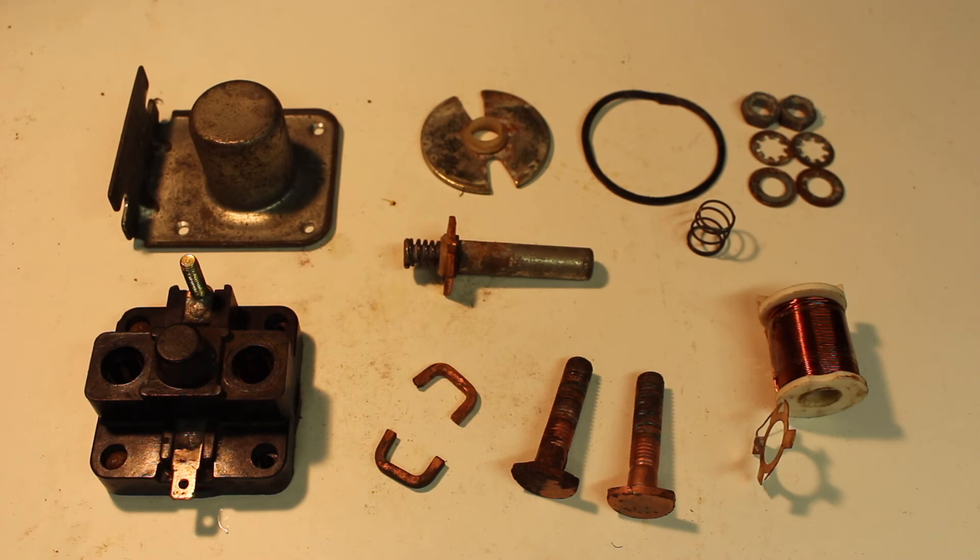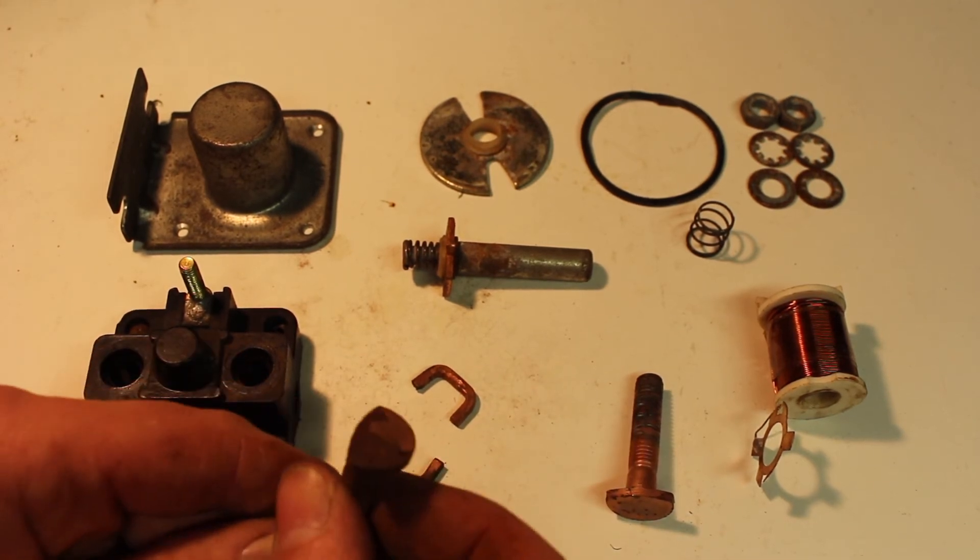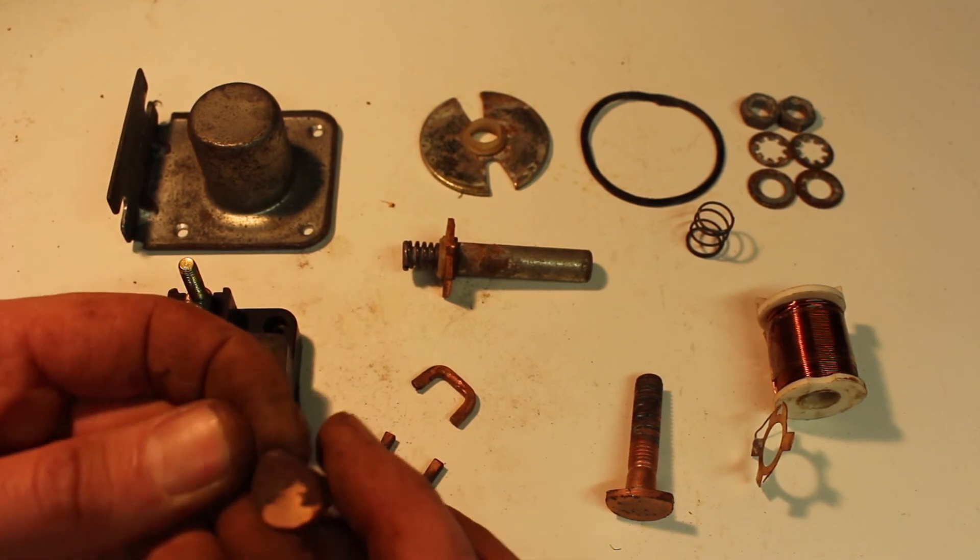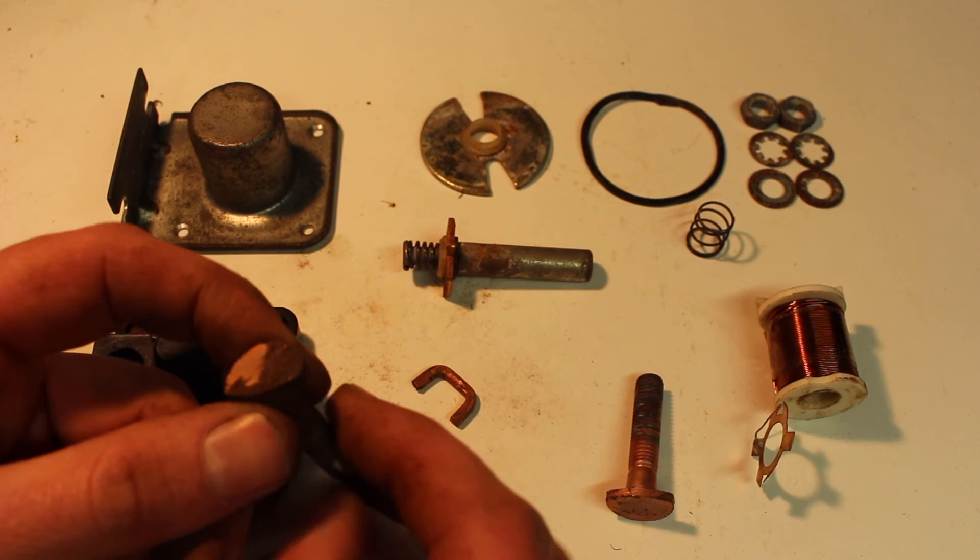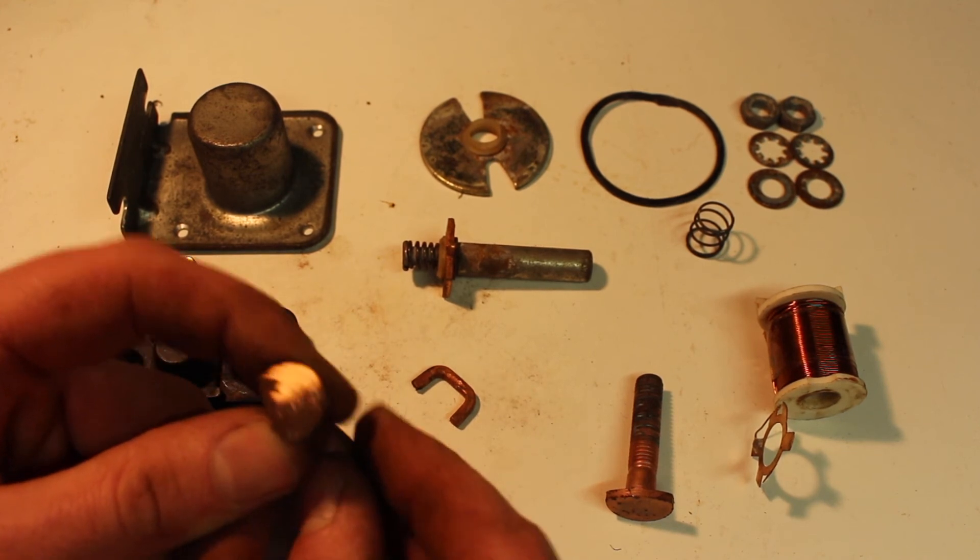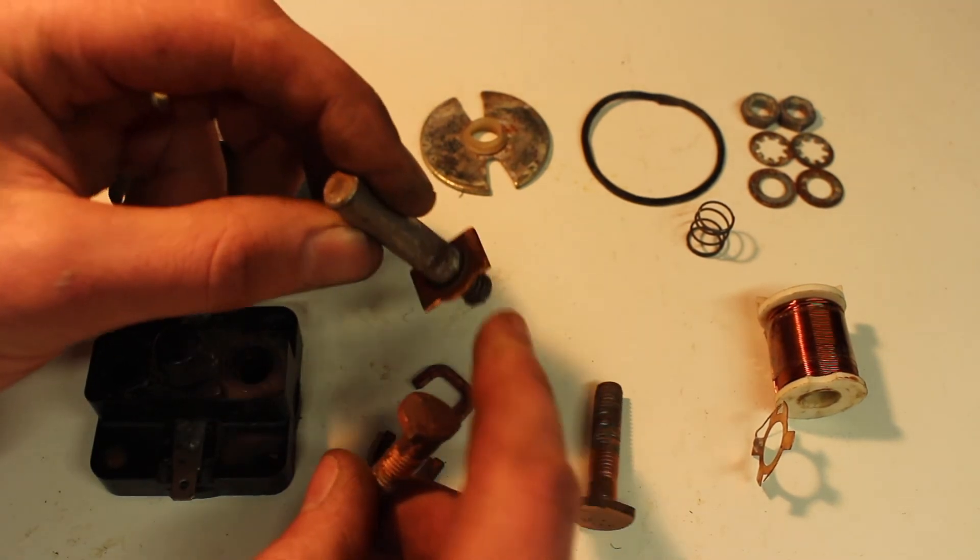So after a little bit of work, these two are actually glued in. We have it all apart and we can see that our problem is that there is corrosion just from water ingress by the look of it from sitting over time on the contacts of one of the terminals and also on one side of the contact point on the plunger.